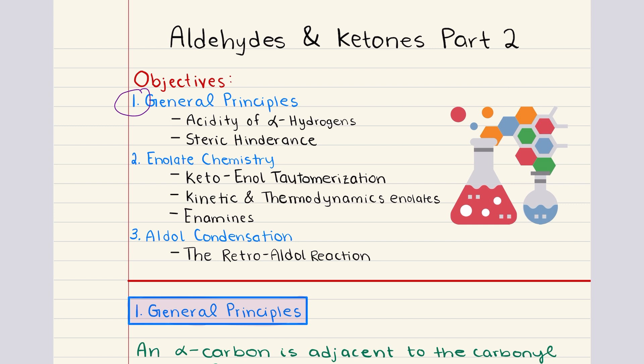In this chapter, we're going to cover the following objectives. First, we're going to go over some general principles, including the acidity of alpha hydrogens and the role of steric hindrance in shaping reactivity. Then we're going to explore the heart of this chapter, enolate chemistry. This includes keto-enol tautomerization, the difference between kinetic and thermodynamic enolates, and how enamines act as nucleophilic partners. Finally, we'll apply these ideas to one of the most classic carbon-carbon bond-forming reactions in organic chemistry, the aldol condensation reaction, followed by a look at its reverse, the retroaldol reaction.